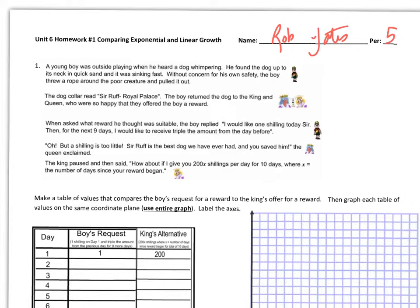First exercise is a young boy was outside playing when he heard a dog whimpering. He found the dog up to its neck in quicksand and it was sinking fast. Without concern for his own safety, the boy threw a rope around the poor creature and pulled it out. The dog called Red, Sir Ruff of the Royal Palace. The boy returned the dog to the king and queen, who were so happy that they offered the boy a reward.